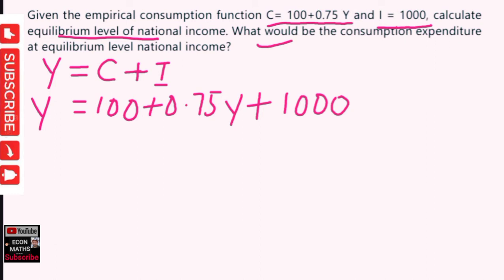Now, we will transpose this Y to the left-hand side, so this will become Y - 0.75Y = 100 + 1000. This comes out to be 1100.